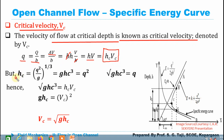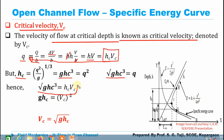We know Hc = (q²/g)^(1/3), so cubing both sides gives Hc³ = q²/g, meaning q² = g·Hc³. Taking the square root: q = √(g·Hc³). Substituting into q = Hc × Vc gives √(g·Hc³) = Hc × Vc. Cancelling one Hc and squaring both sides yields g·Hc = Vc². Therefore the critical velocity equation is Vc = √(g·Hc).